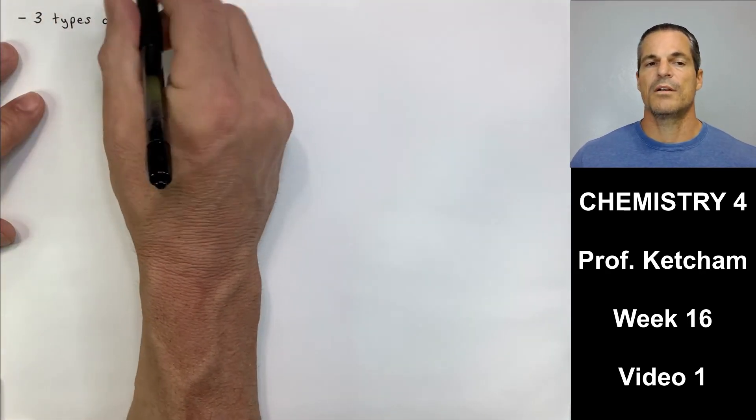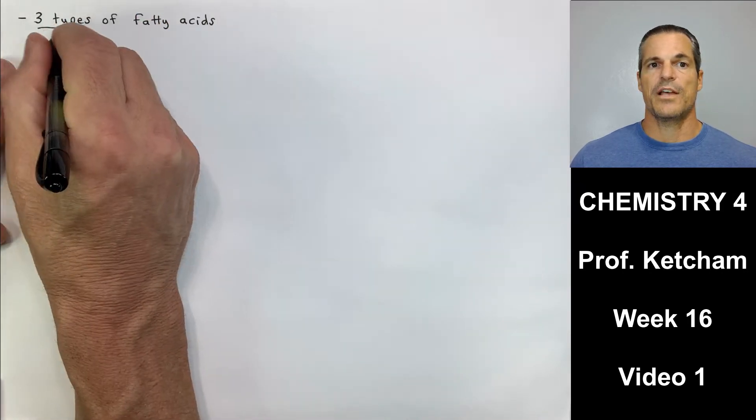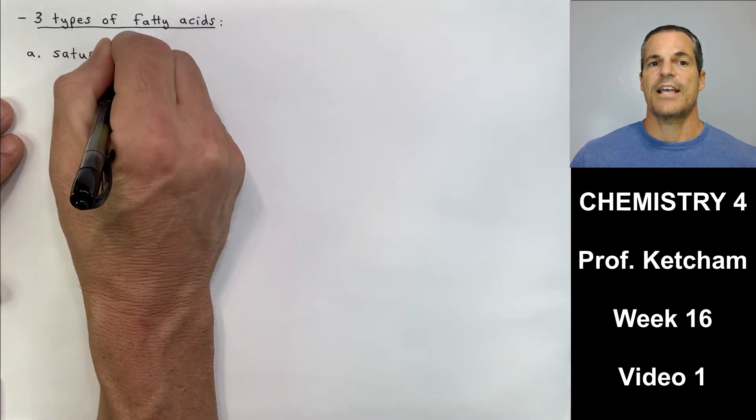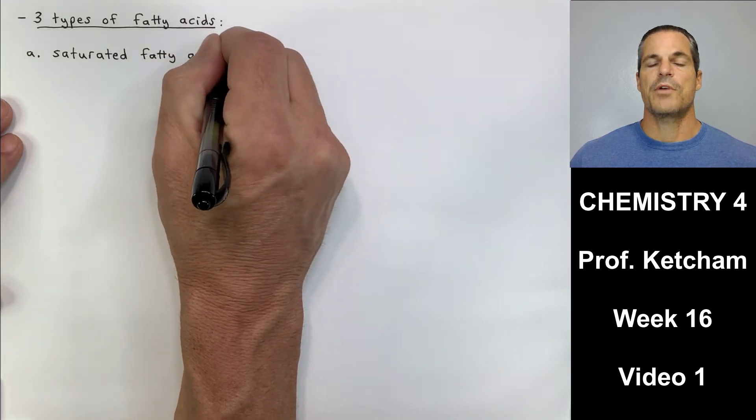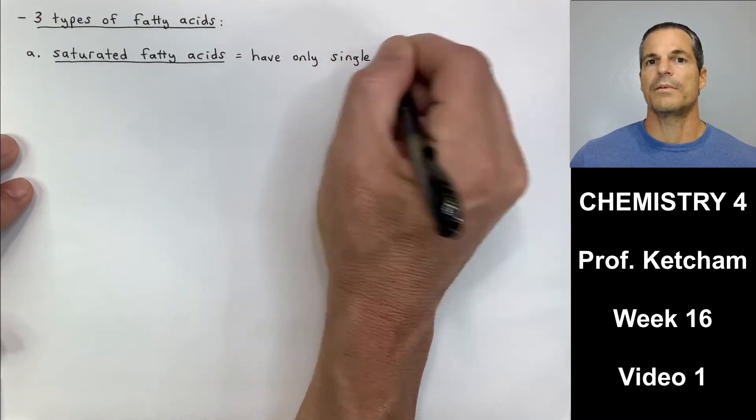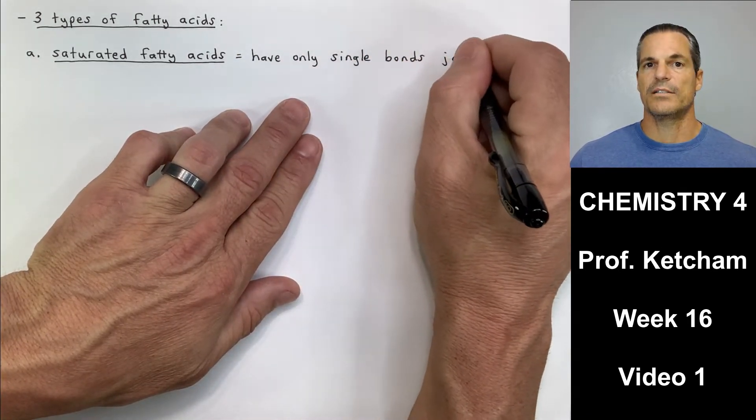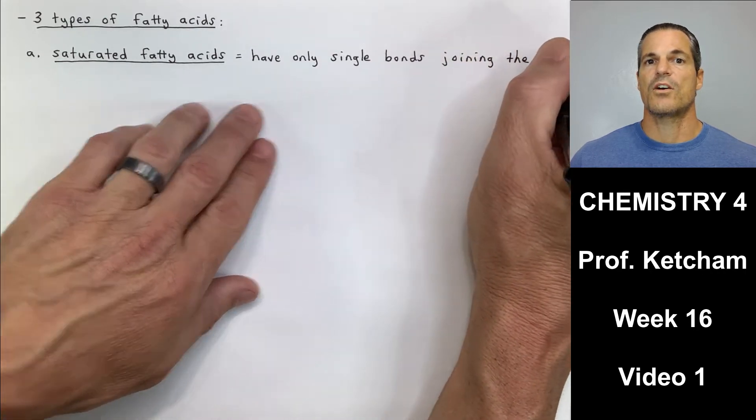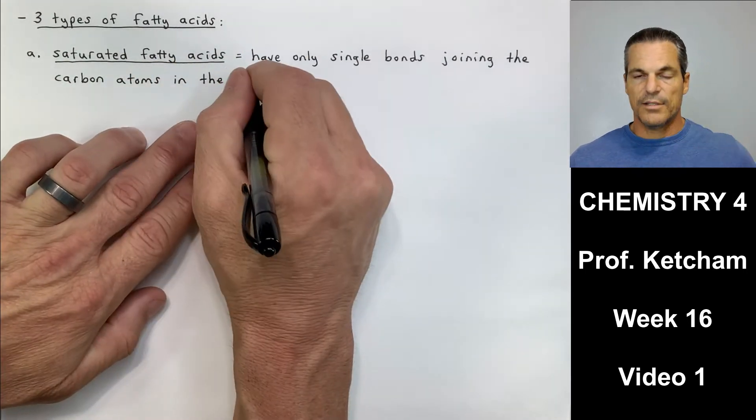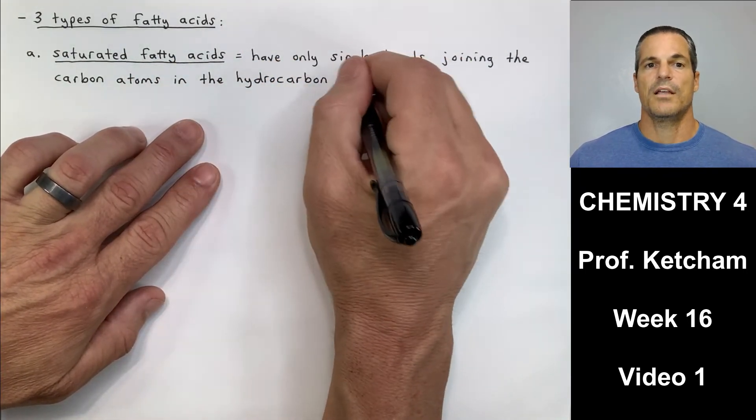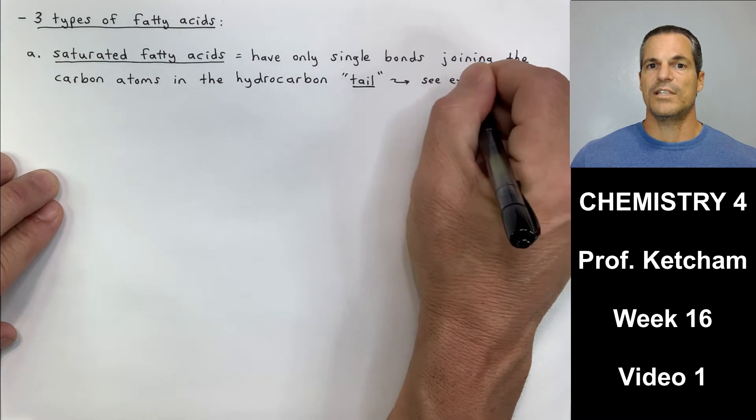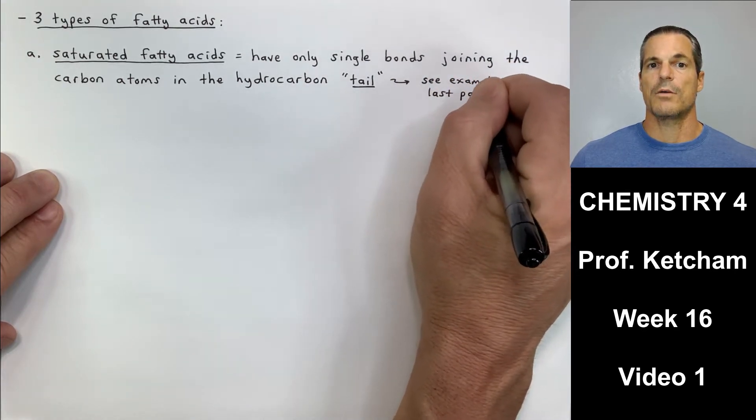We're still examining fatty acids. We're going to do that for this entire video. There are three types of fatty acids. There are saturated fatty acids and saturated fatty acids contain no carbon-carbon double bonds or triple bonds, but no carbon-carbon double bonds. They have only single bonds joining the carbon-carbon hydrocarbon chain. So that big long tail is nothing but carbon-carbon single bonds and then a whole bunch of H's all around the carbon-carbon bonds.